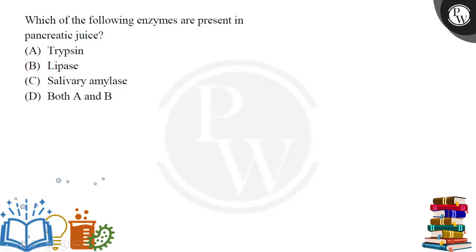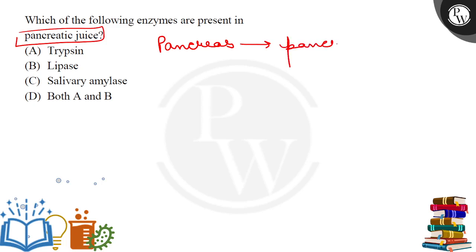Hi everyone, let us see the question. Which of the following enzymes are present in pancreatic juice? Our organ is an associated gland which is called pancreas. Pancreas secretes pancreatic juice, and in pancreatic juice there are enzymes that help the digestion of food.